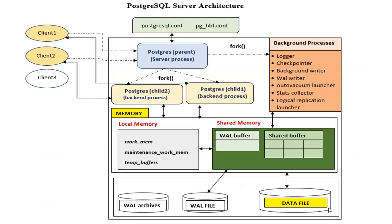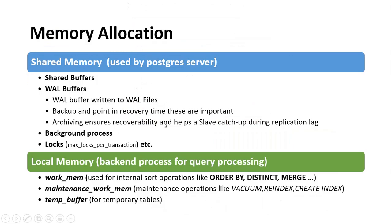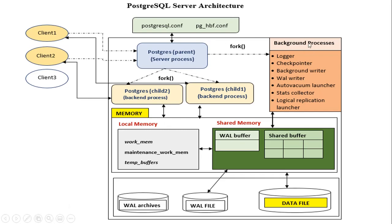For local memory, each backend process gets its own local memory area for query processing. Any query involving sort operations like ORDER BY, hash joins, or other similar operations will utilize work_mem. Another parameter, maintenance_work_mem, is used for maintenance operations like VACUUM, CREATE INDEX, and REINDEX. Temporary buffers are used for storing temporary tables.